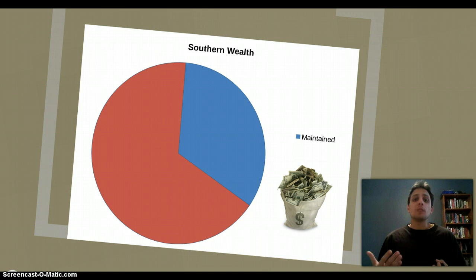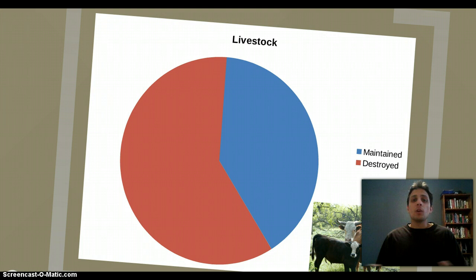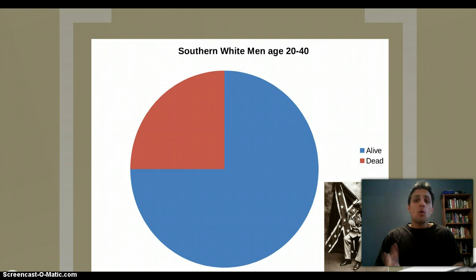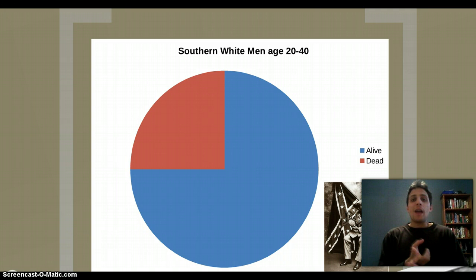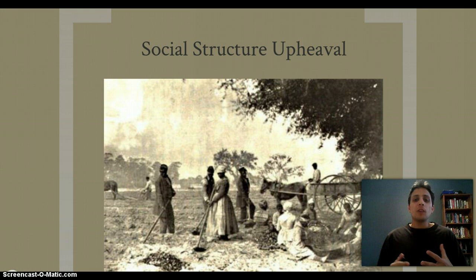About two-fifths of all livestock in the South are destroyed as a result of the Civil War, hitting the food supply hard. In terms of people, they're going to lose about a quarter of all white men between the ages of 20 and 40 — a huge chunk of their population, affecting the workforce and the social structure in a big way. On top of that, Lincoln issued the Emancipation Proclamation in 1863, followed in 1865 by the 13th Amendment, which is the complete abolition of slavery throughout all of the United States, not just the states that were in rebellion.